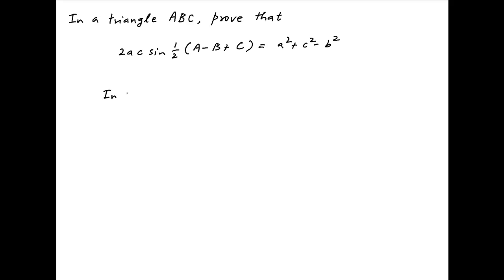In any triangle ABC, the sum of the angles A, B and C is equal to 180 degrees or pi.